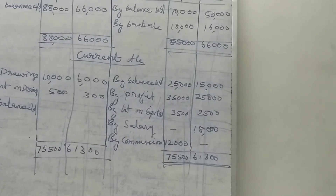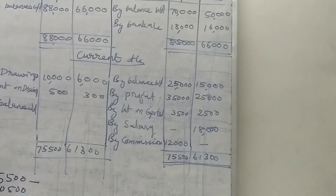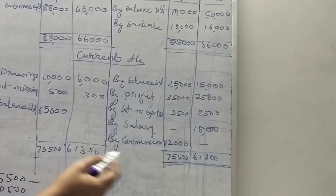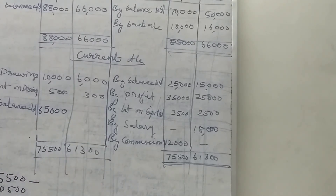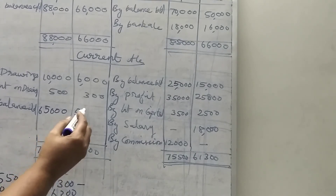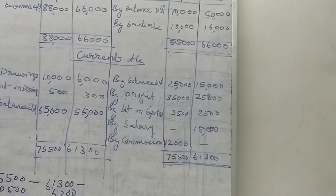Now find out the total and the closing balance. The credit side total for Ruben is 75,500 and for Derry is 61,300. Subtracting the debit side: Ruben 75,500 minus 10,500 gives a closing balance of 65,000. Derry 61,300 minus 6,300 gives a closing balance of 55,000. This is the balance carried down.